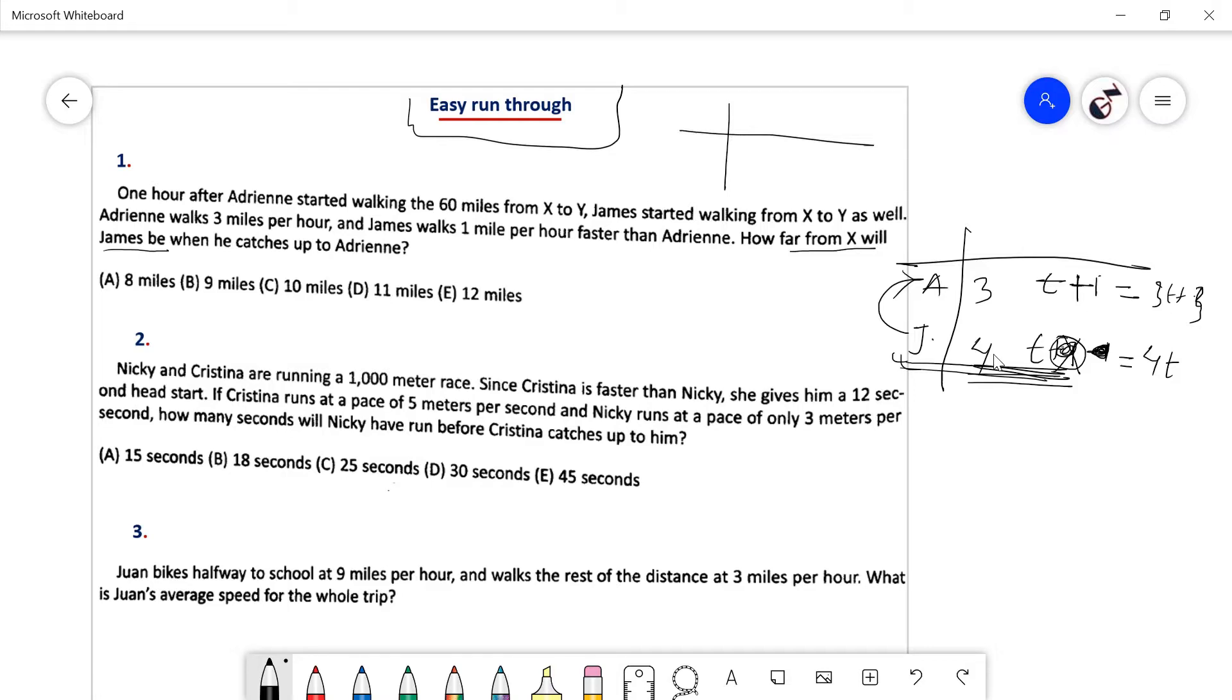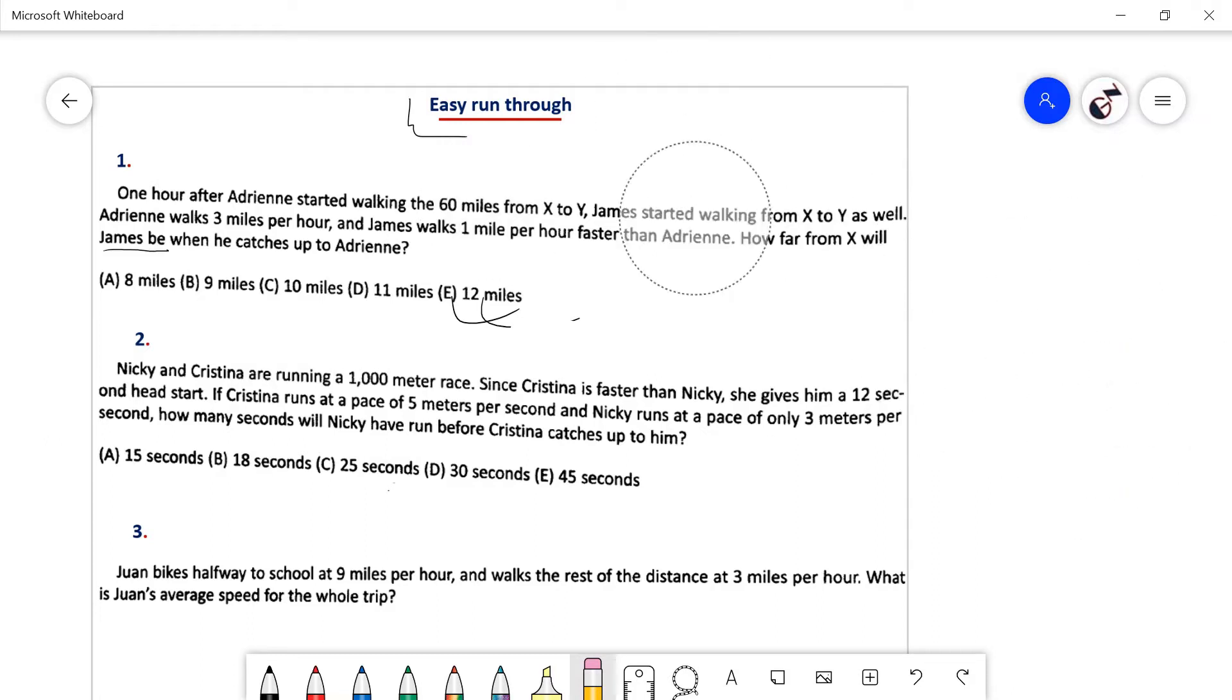If we add the distances, the distance traveled by James equals distance traveled by Adrienne. We can write 4t equals 3t plus 3. Solving this, 4t minus 3t equals 3, so t equals 3. The distance is 4 times 3 equals 12 miles.